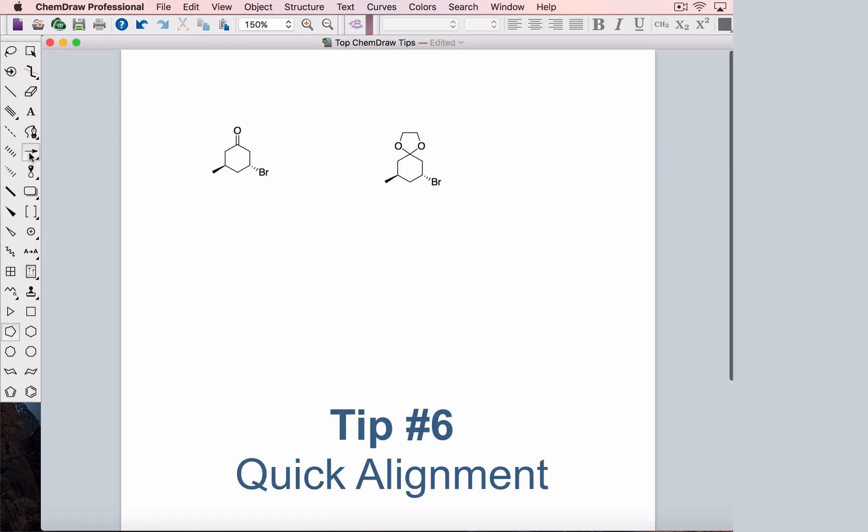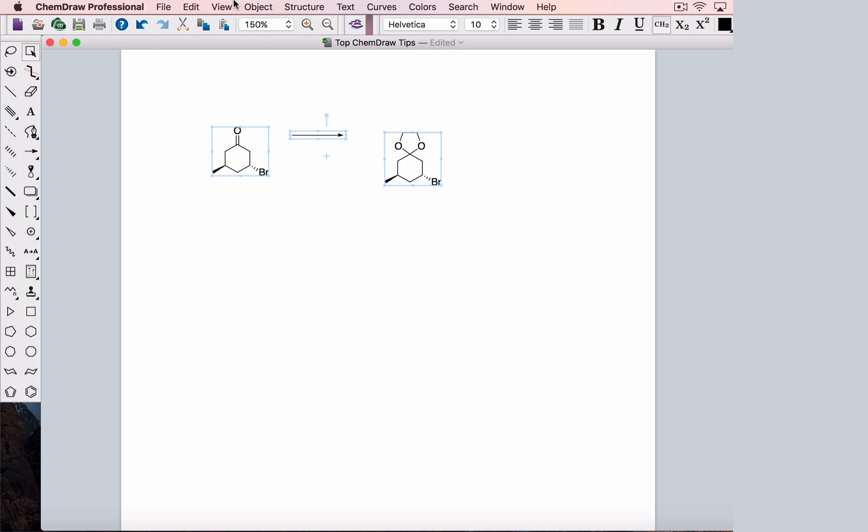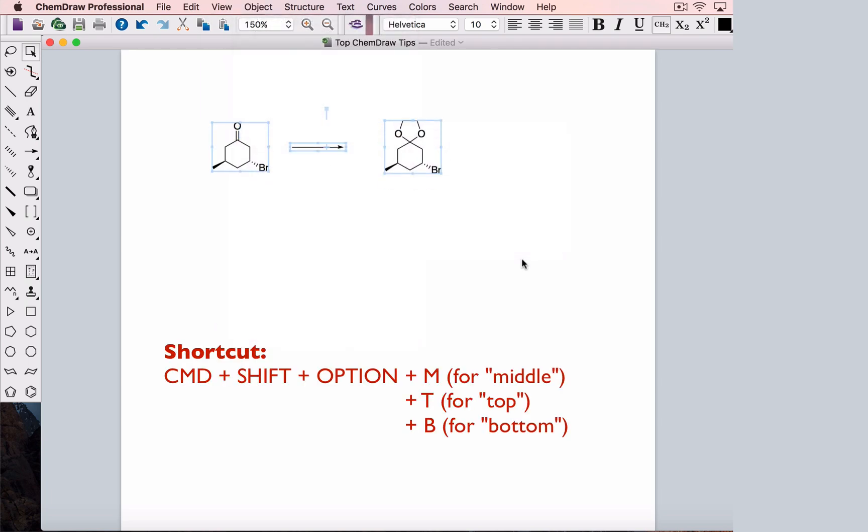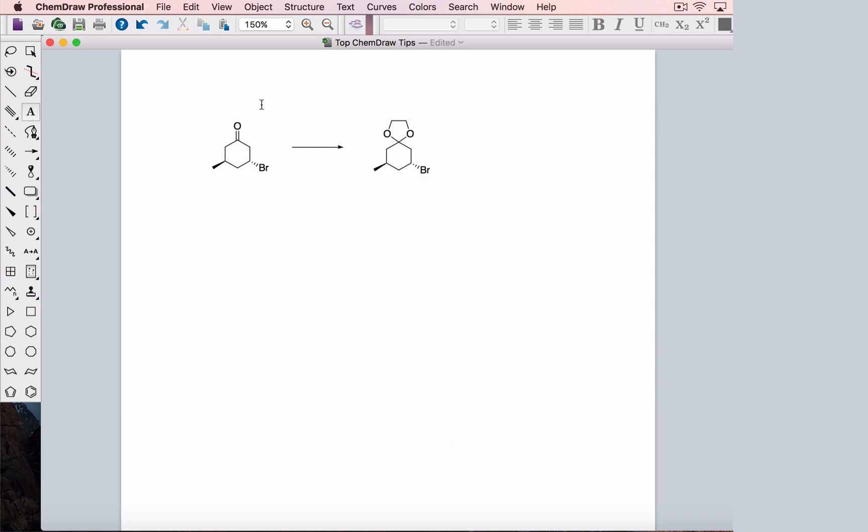Here I've drawn a reaction where a ketone is converted to an acetal, but my product is much lower on the page than the starting material and my arrow really isn't in line either. We can select each object we want to align and then visit the object menu. I'm going to align top and bottom centers and this will line up the middle of each of my molecules. Now I'll scoot this structure over a little bit and our scheme is looking pretty good.